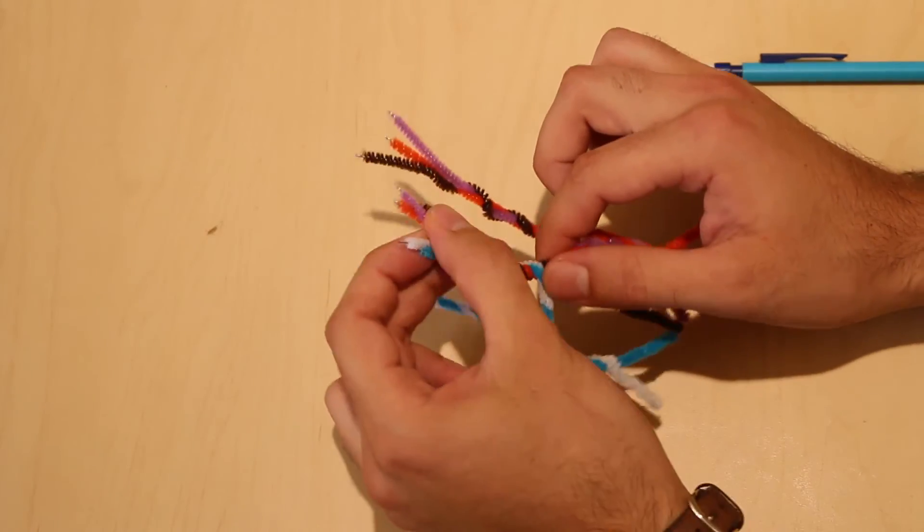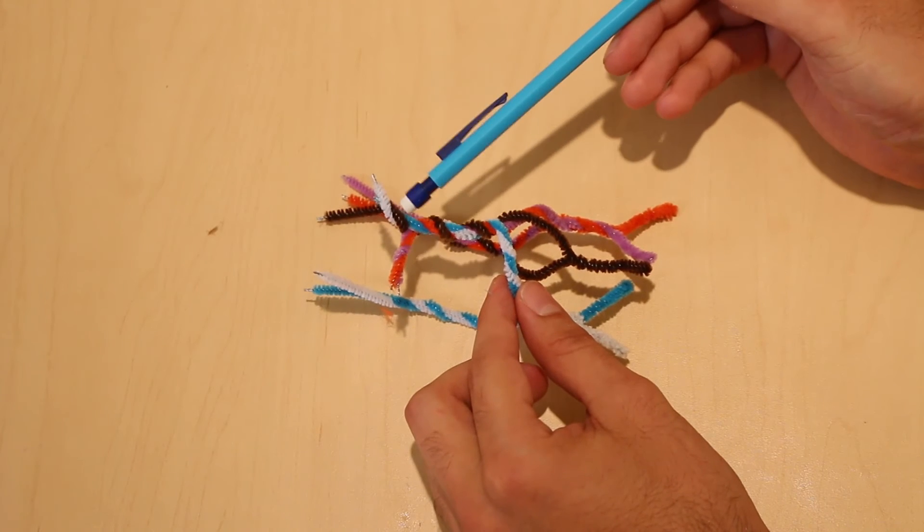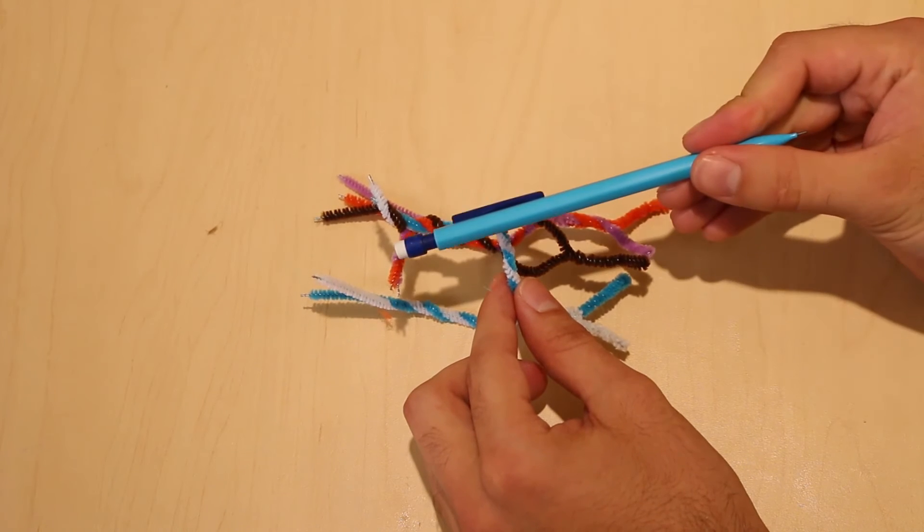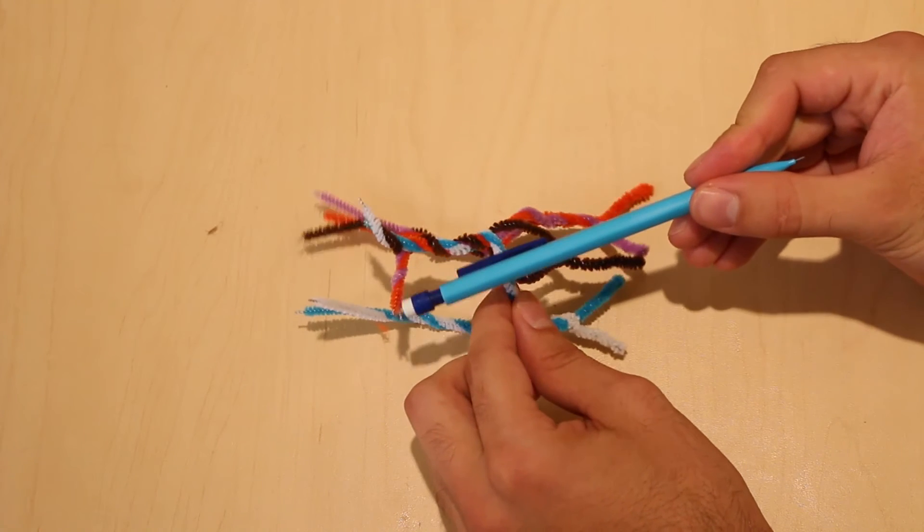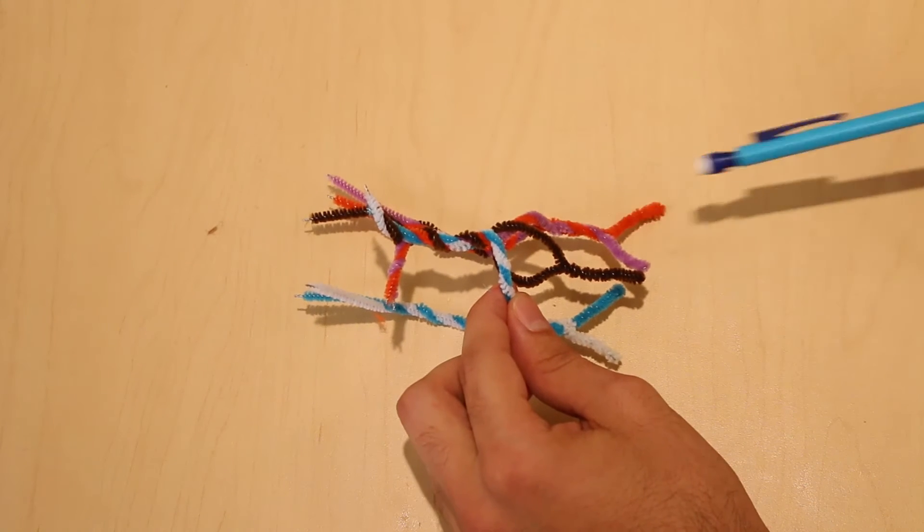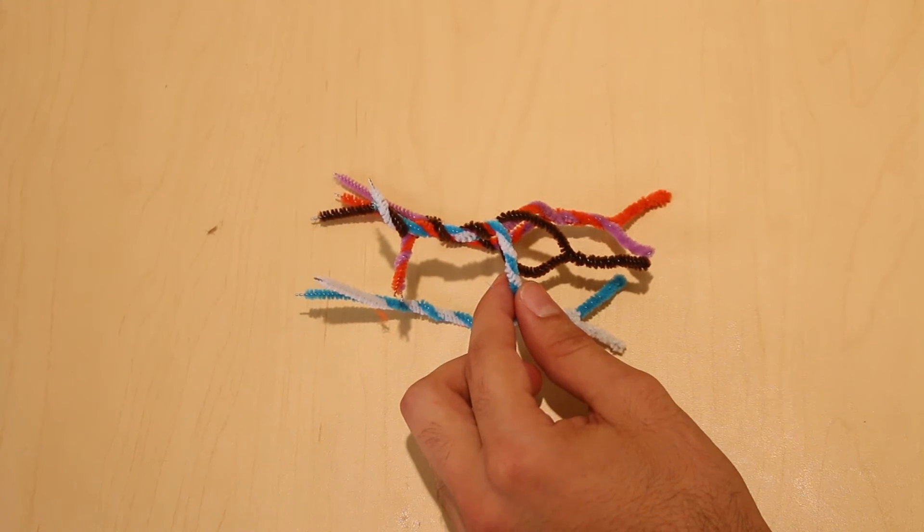Next, we are going to talk about the posterior cord. From the posterior cord, we have two branches that are named for where they are moving to. The axillary branch is going to travel down inferiorly into the axilla, while the radial branch is going to travel under the muscles of the arm to the radius.